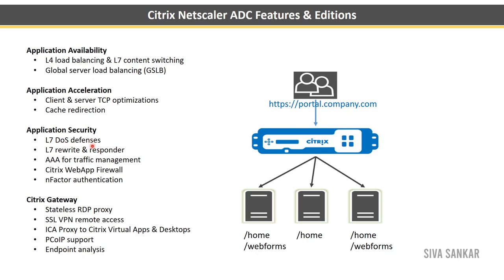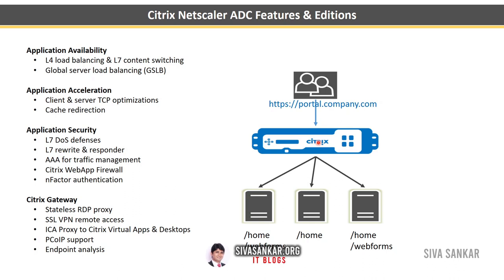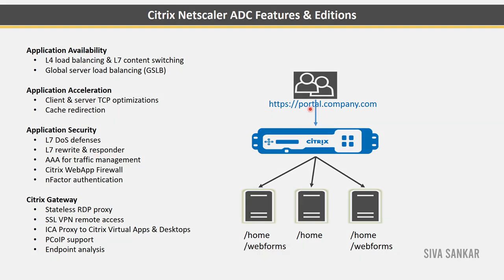For application security, there's L7 DDoS defense. A DDoS attack means someone is sending millions of requests to your portal in a very short time, which can overwhelm NetScaler. With DDoS defense enabled, NetScaler detects that multiple fake requests are coming and drops those connections.